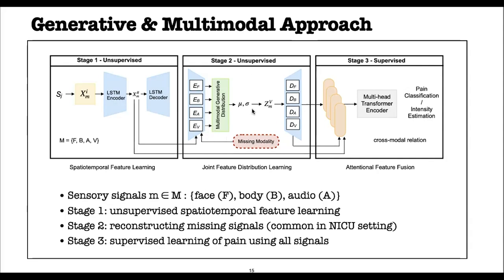We learn a joint feature distribution, and the main purpose of this stage is to learn the distribution of missing modalities for reconstruction — which is very important because missing data is very common in the ICU. After generating the feature vectors and reconstructing missing modalities, we stack the latent features of face, body, audio, and vital signs and apply a multi-head transformer encoder to learn cross-modal relations. The attentive features are concatenated and used as a final feature vector to generate the pain level or intensity.